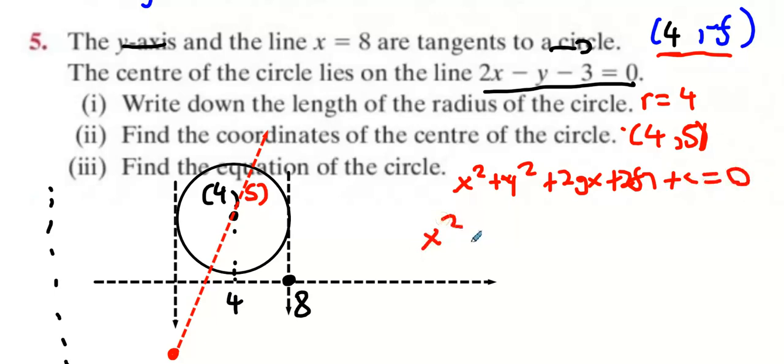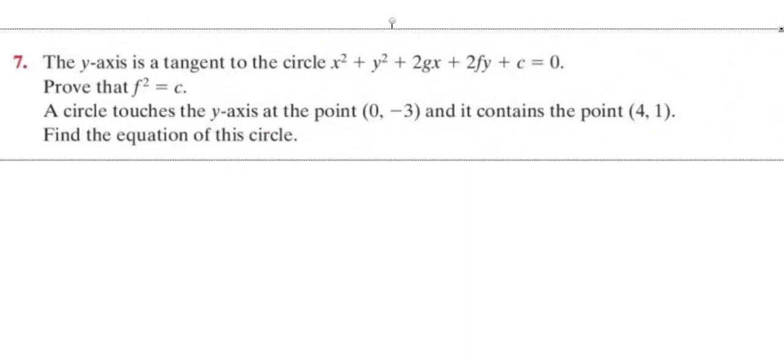So x squared plus y squared. What's 2gx? 2 times minus 4 is minus 8x. And 2 times minus 5 is minus 10y. Because g is minus 4 and f is minus 5. Would you agree that c is f squared? And what's f squared? f squared is 25. And that equals 0. And we're done.